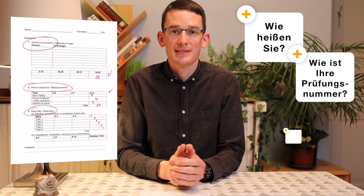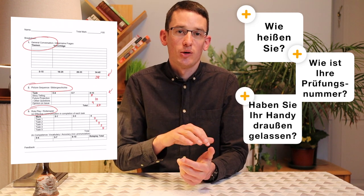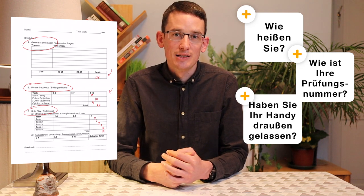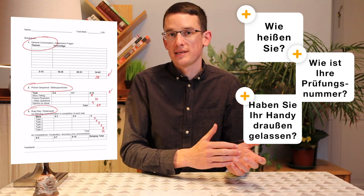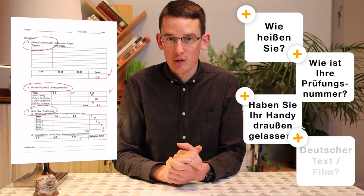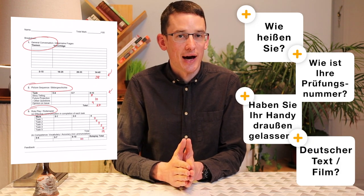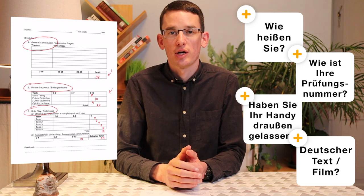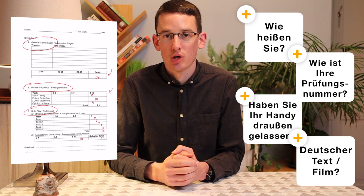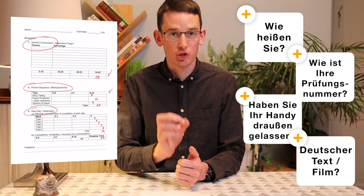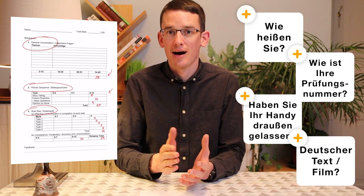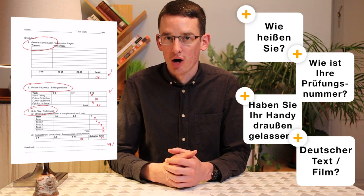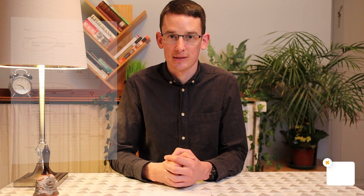You'll also be asked 'Haben Sie Ihr Handy draußen gelassen?' which you can answer 'Ja' to — you should have left your phone outside. Also, sometime during the exam you'll be asked 'Möchten Sie über einen deutschen Text oder einen Film sprechen?' Make sure you only say 'Ja' if you have prepared a concise and accurate paragraph on that, otherwise you may lose marks.